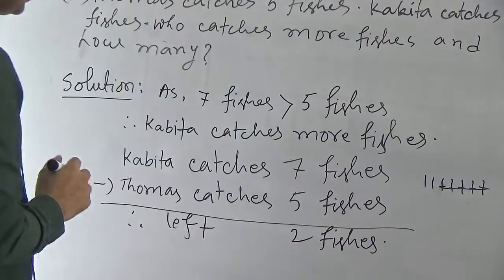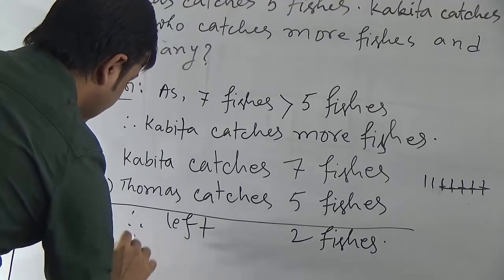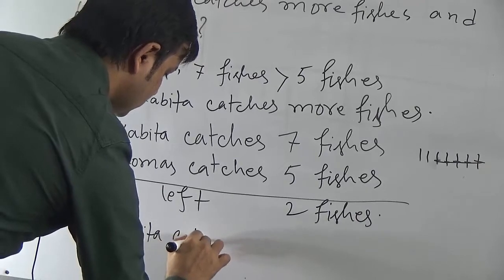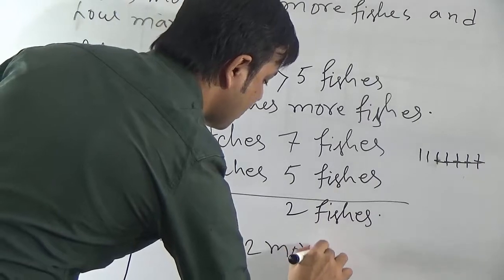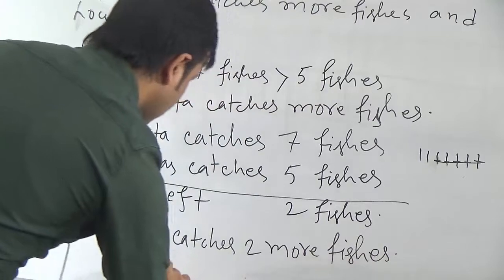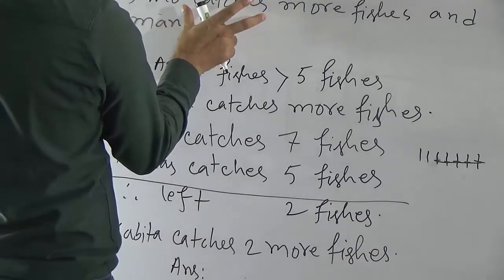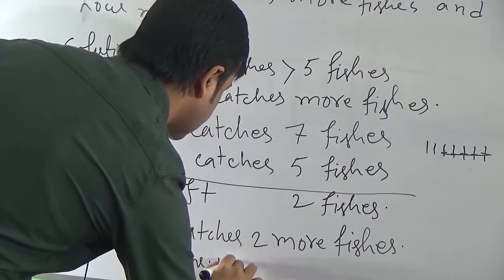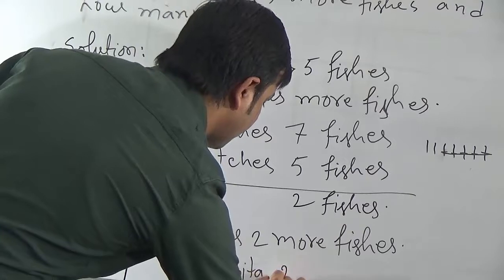So we can write, therefore, Covita catches 2 more fishes. Our required answer has 2 parts since the question has 2 portions. First part: Covita catches more fishes. Second part: Covita catches 2 more fishes.